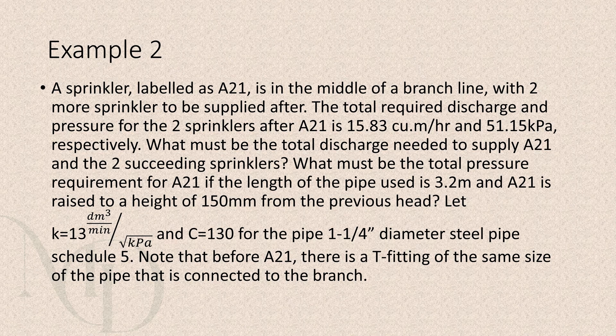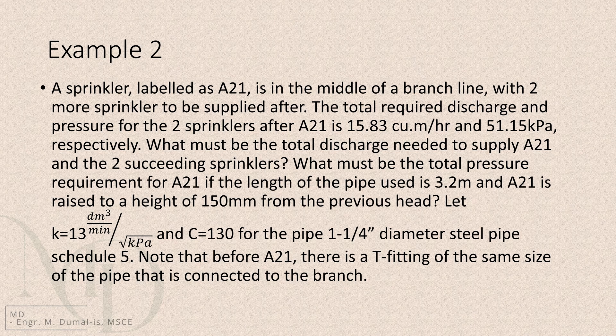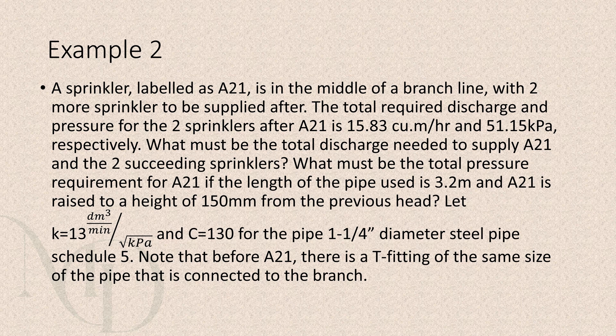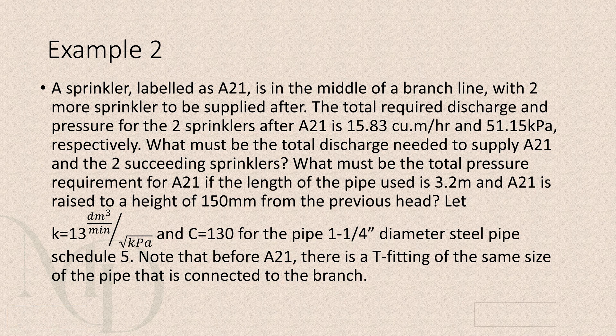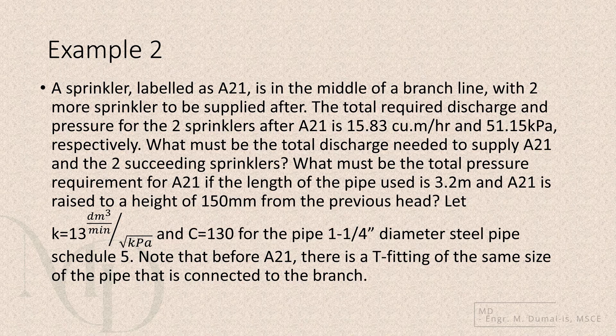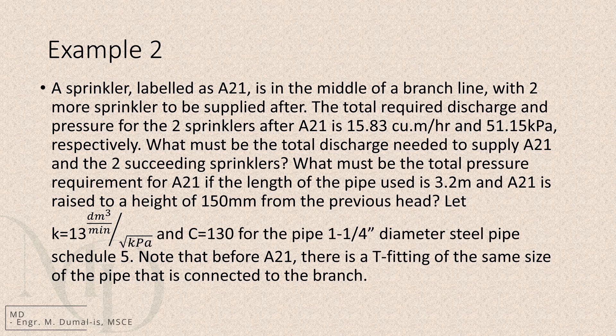What must be the total pressure requirement for capital A21, if the length of the pipe used is 3.2 meters and capital A21 is raised by 150 millimeters from the previous head? Take note of the following data. K equals 13 cubic decimeters per minute per square root of kilopascal. C equals 130 for the pipe 1 and 1 quarter inch diameter steel pipe schedule 5. Also note that before capital A21 there is a T fitting of the same size as the pipe that is connected to the branch. Alright, that is the problem. Moving forward we will compute the required discharge first then the pressure demand for capital A21.